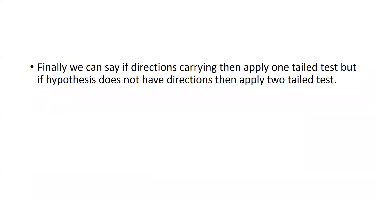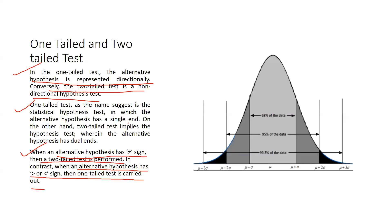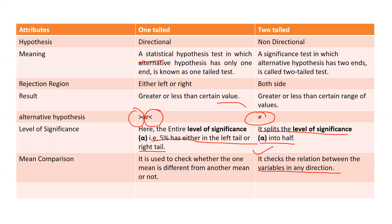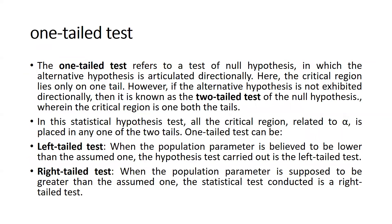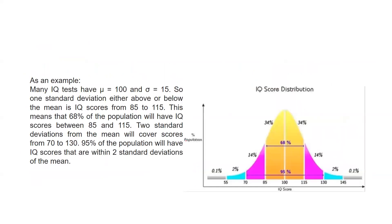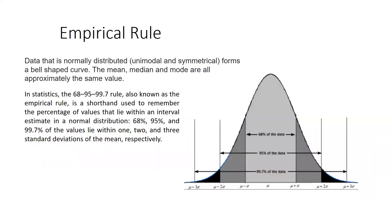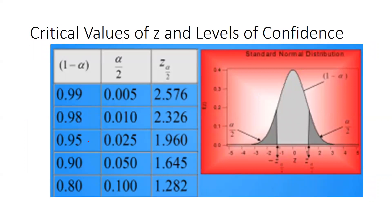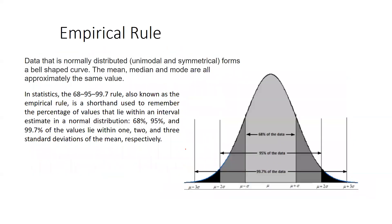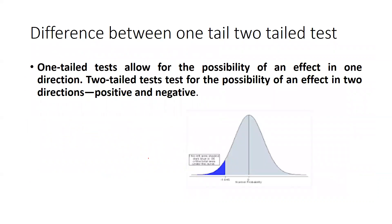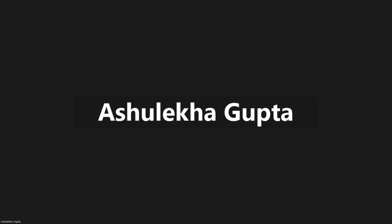Finally, if the hypothesis has direction, apply a one-tailed test; if the hypothesis does not have direction, apply a two-tailed test. You can see on the bell-shaped curve: 68%, 95%, and 99% from both sides. For the two-tailed case at 95%, that means 0.025 towards the left side and 0.025 towards the right side — those are the critical values. Thank you, keep watching and stay tuned.